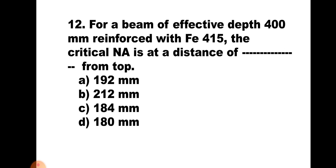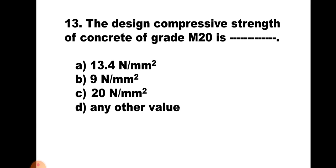Question number 12: For a beam of effective depth 400 mm reinforced with FE415, the critical neutral axis is at a distance of dash from the top. A. 192 mm, B. 212 mm, C. 184 mm, D. 180 mm. For FE415, the critical neutral axis is at 0.48D from the top. Putting D = 400 mm gives 192 mm. The correct answer is A. 192 mm.